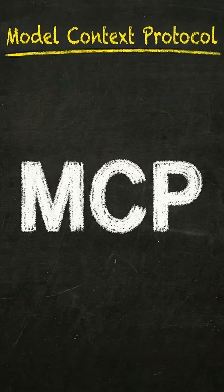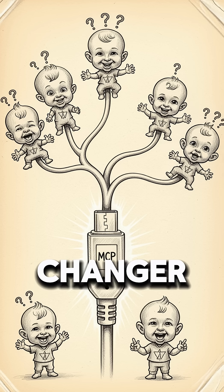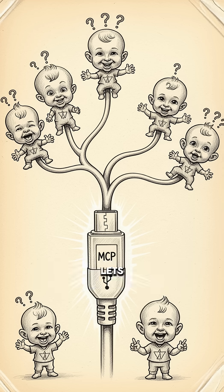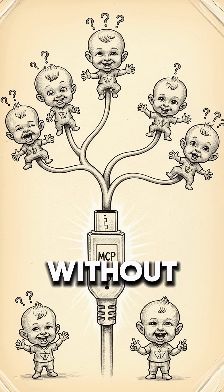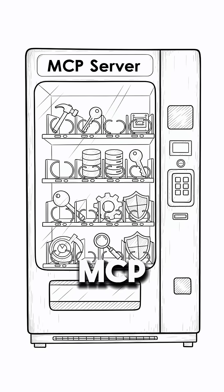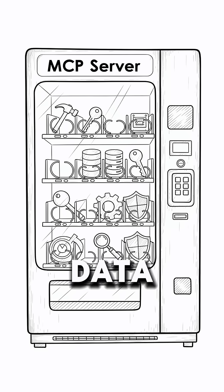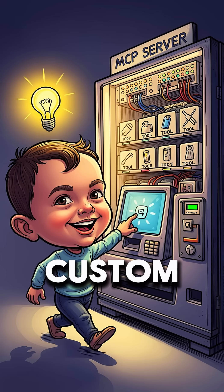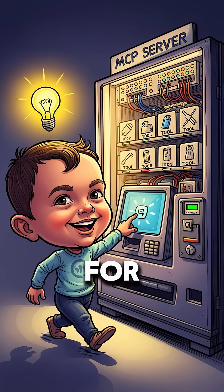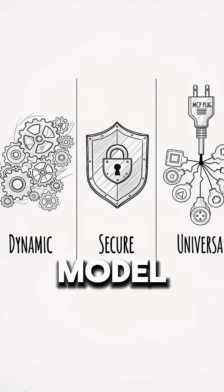Enter MCP — Model Context Protocol. This is the game changer. The USB-C for AI that finally lets these models plug into the real world without crying. You set up a lightweight MCP server that exposes your tools or data in one standard way. The AI sees it, discovers it on its own, and figures out how to use it. No more custom wrappers or begging for keys. It's dynamic, secure, and works across any model.